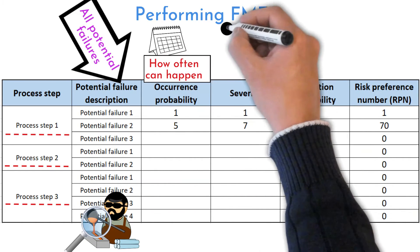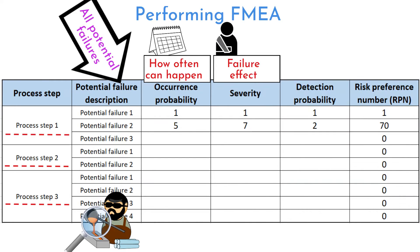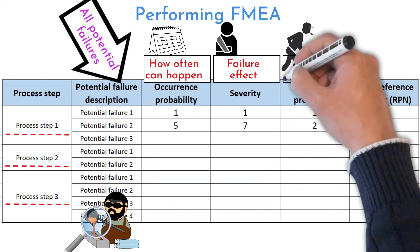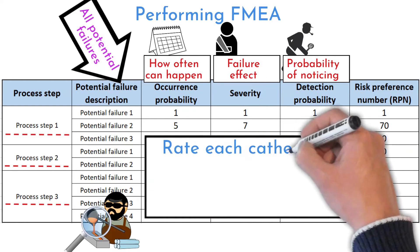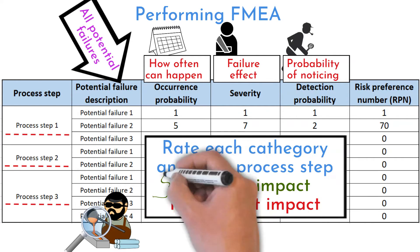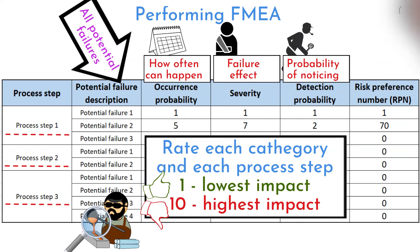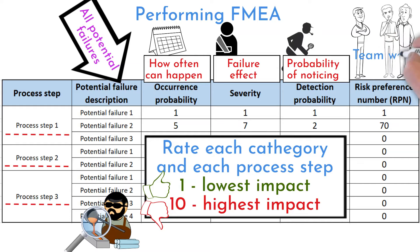Occurrence defines how likely a failure will occur. Severity ranks the failure effect. Detection ranks how likely a failure will be noticed. Rank all three categories from 1 to 10 — 1 for the lowest and 10 for the most negative impact. Work in teams to rate probability, severity, and detection number for each potential failure.